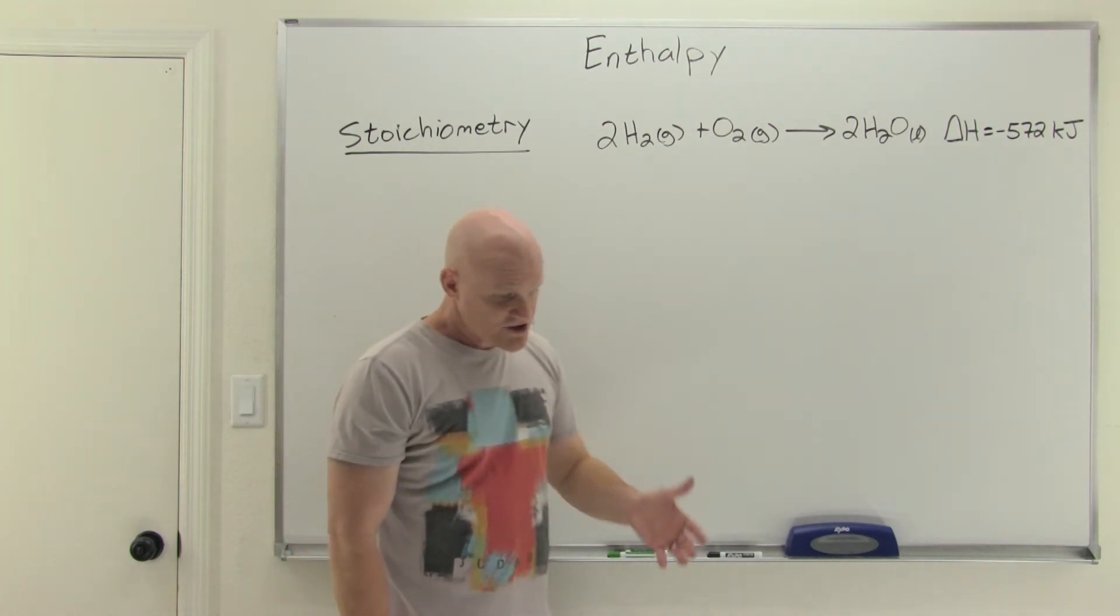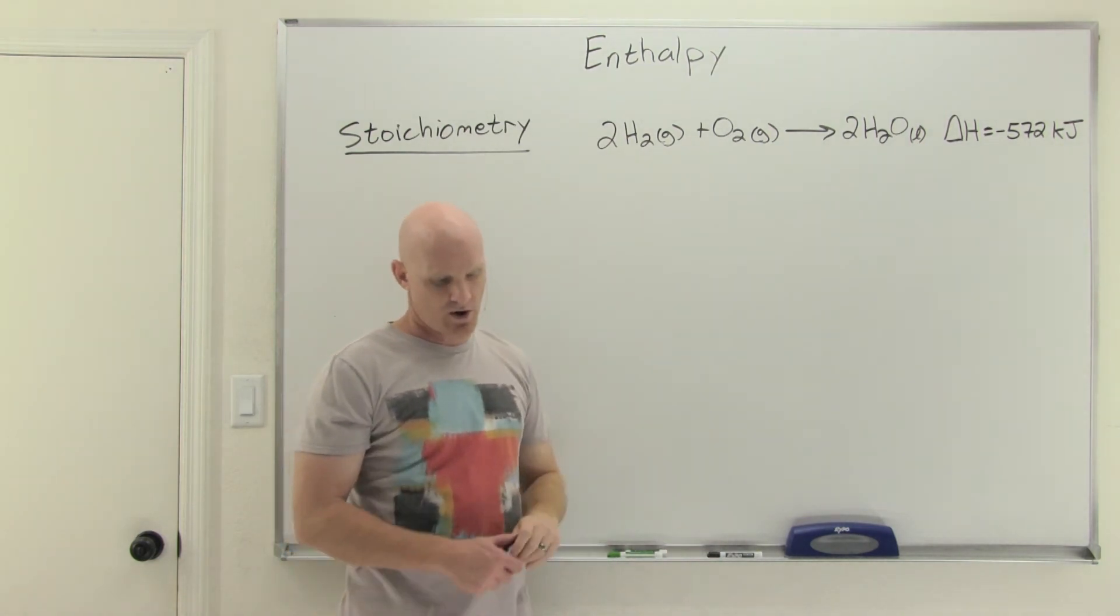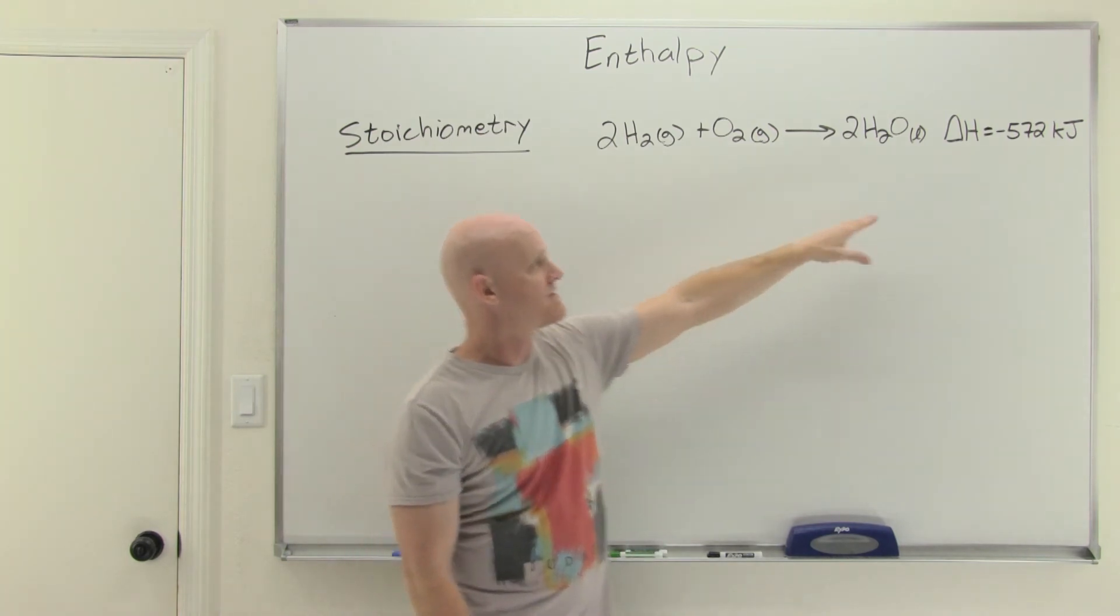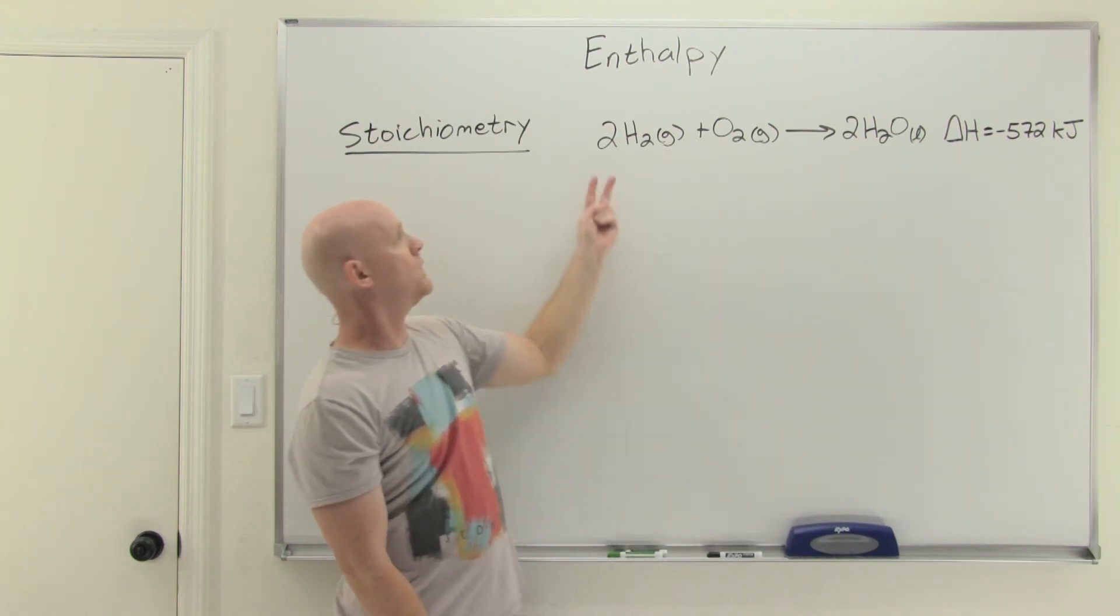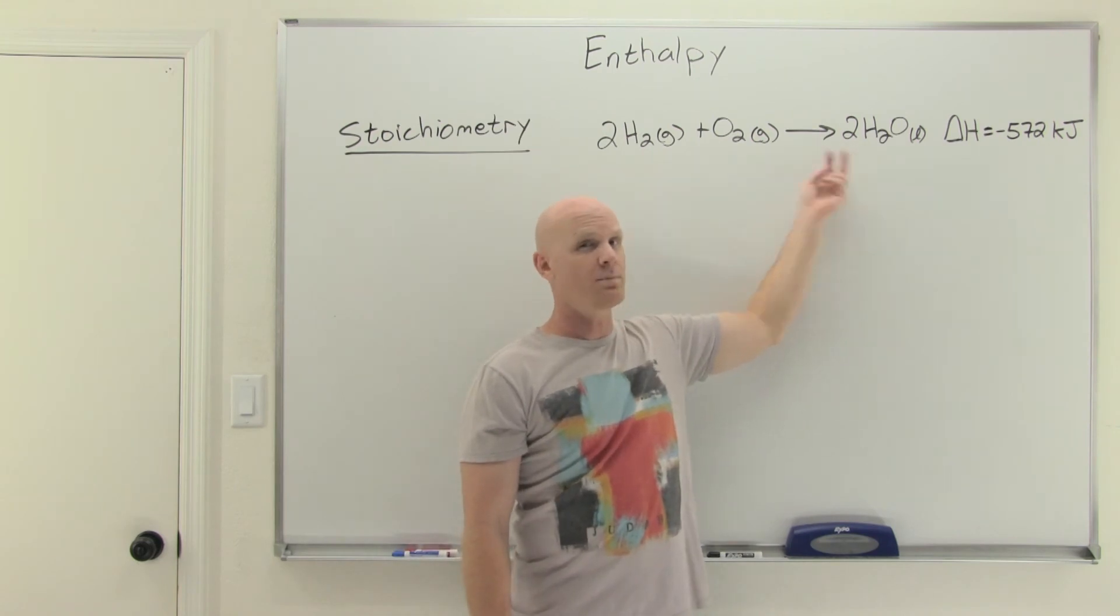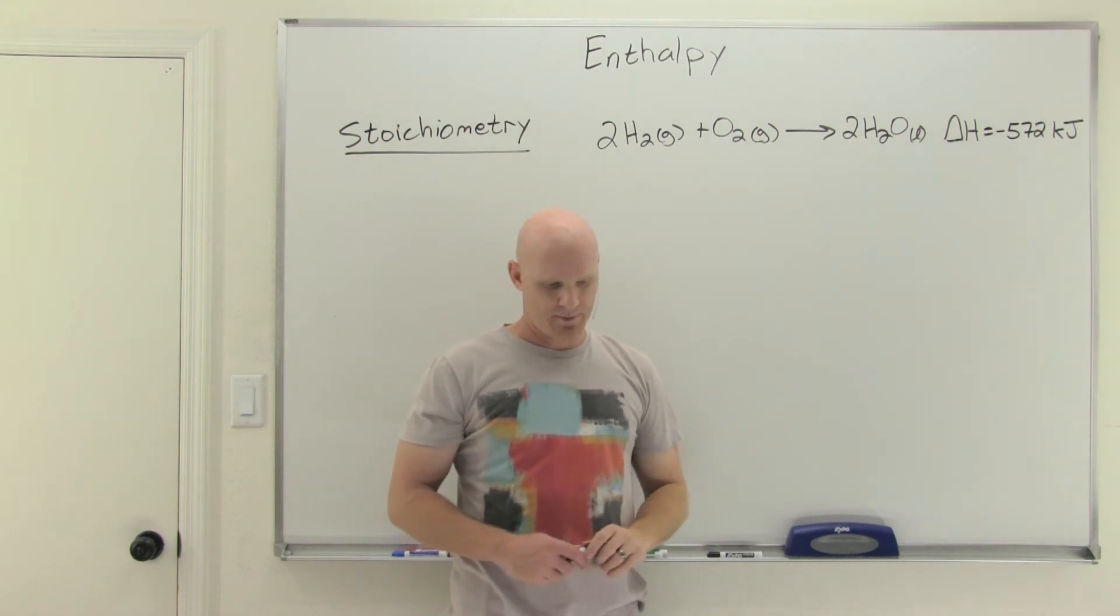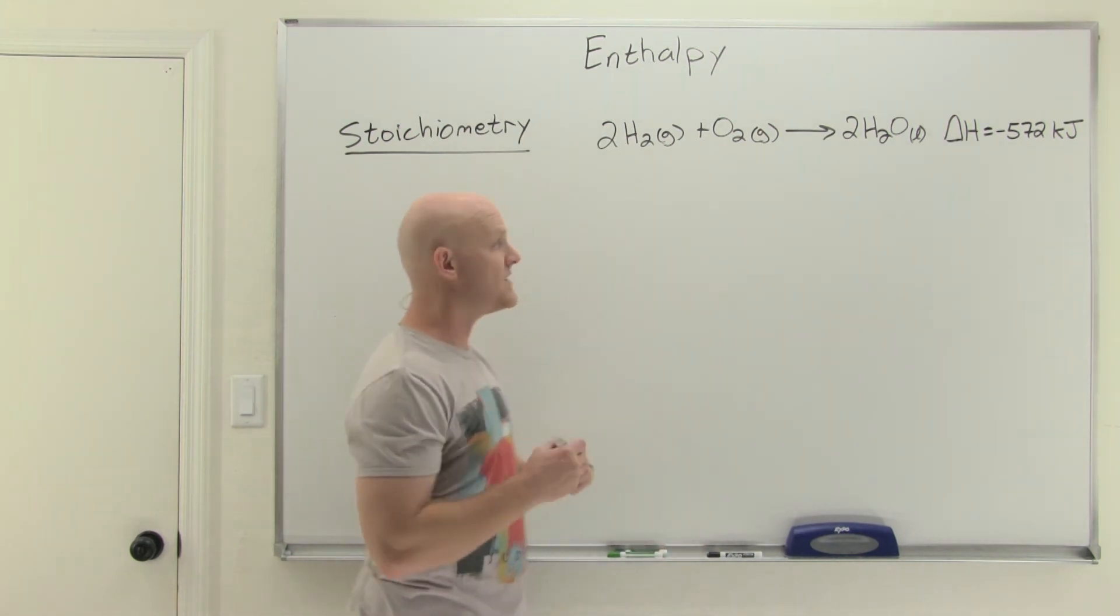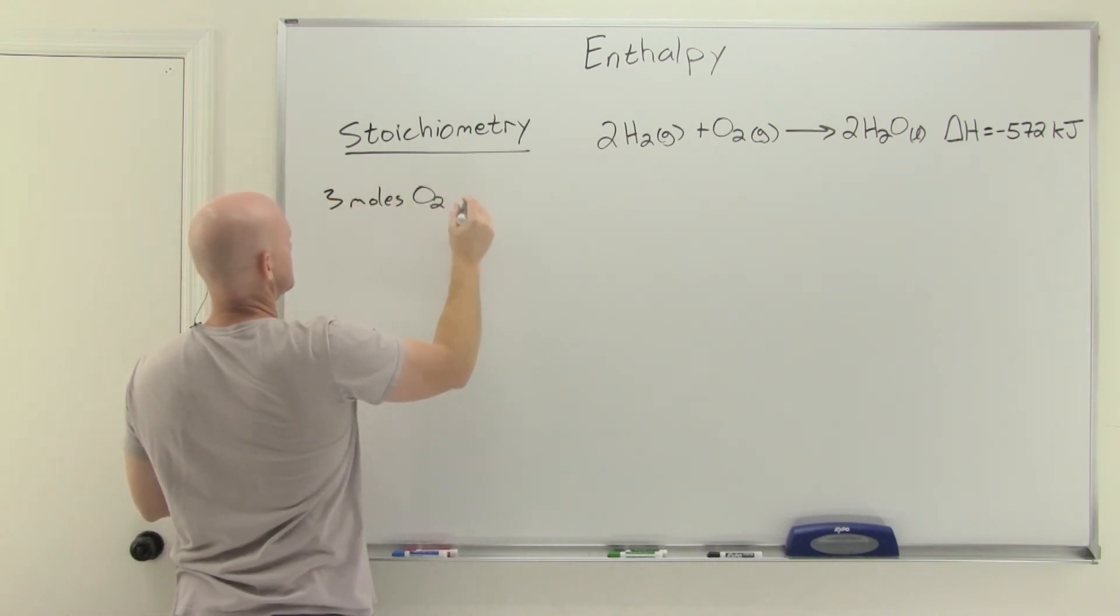The question here is: what is the enthalpy change when three moles of O2 are consumed in this reaction? It turns out this is the delta H when one mole of O2 is consumed and when two moles of H2 are consumed and when two moles of water are produced. It's scaled to one mole of O2 though. So the question is, what would happen if you consumed three moles? You want to start with what you have and we start with those three moles. Three moles of O2 being consumed.